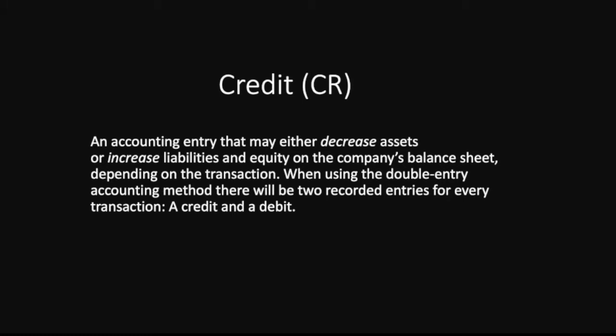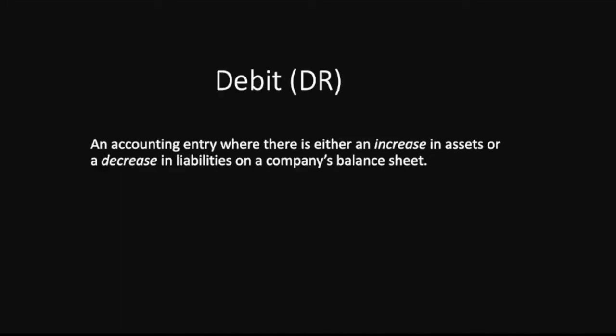Credit (CR) is an accounting entry that may either decrease assets or increase liabilities and equity on the company's balance sheet, depending on the transaction. When using the double-entry accounting journal, there will be two recorded entries for every transaction — a debit and a credit. Debit (DR), on the other hand, is an accounting entry where there is either an increase in assets or a decrease in liabilities on the company's balance sheet. More details will be covered in a later module.